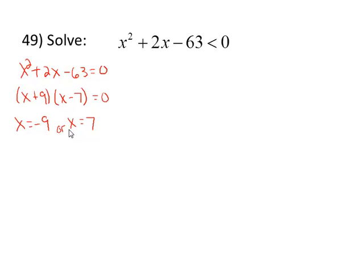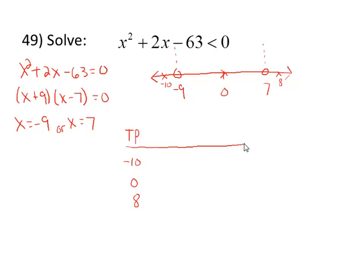On the number line, I'm going to put an open circle at -9 and another one at positive 7. This breaks my number line into three intervals, and I need to select a value from each interval, say -10, 0, and positive 8. Those are going to be my test points.